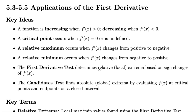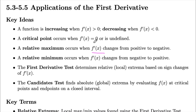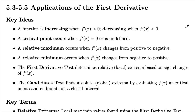Next up are applications of the first derivative. Remember, the first derivative basically gives us the slope. When the derivative is positive, it tells us the function is increasing — it has a positive slope. When the derivative is negative, it tells us the function is decreasing. A critical point occurs when the first derivative is equal to zero or undefined. A relative maximum can be found when the first derivative goes from positive to negative, and a relative minimum occurs when it goes from negative to positive. We can use the first derivative test and a table of values to find these.